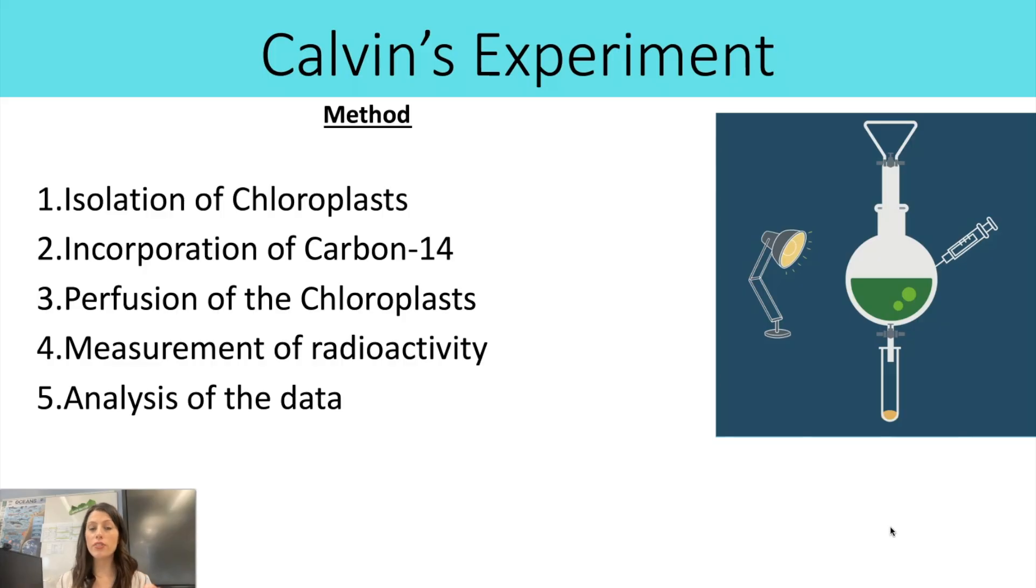Then we've got the incorporation of the carbon-14 isotope. So this is when the carbon is being injected in, in the form of carbon dioxide, into the apparatus. And they would need to leave the apparatus for a set period of time under the exact conditions that they want to do the experiment in to allow that carbon dioxide to be fully incorporated into all of those carbon-containing compounds in the Calvin cycle.